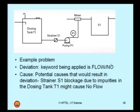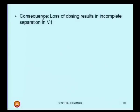What could be the consequence if the flow does not occur? If the flow does not occur, the dose from tank T1 to tank V1 is not properly mixed. For the process to be successful, V1 needs a certain dose from tank T1, which remains incomplete. That is the consequence. The deviation is 'flow/no,' one cause being strainer S1 choked because of impurities, and the consequence is that tank V1 may not receive a sufficient quantity from tank T1.